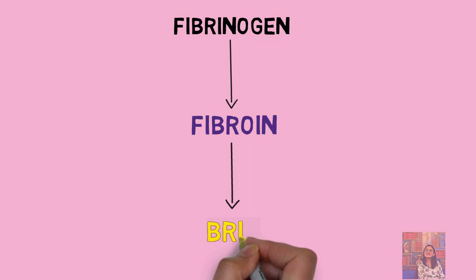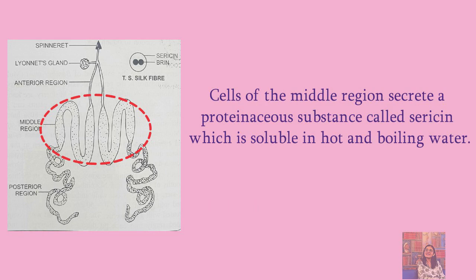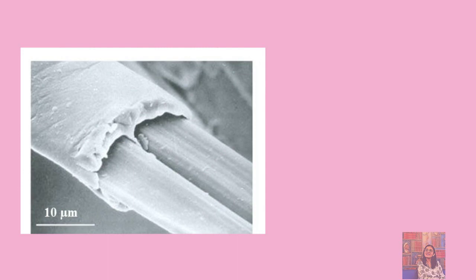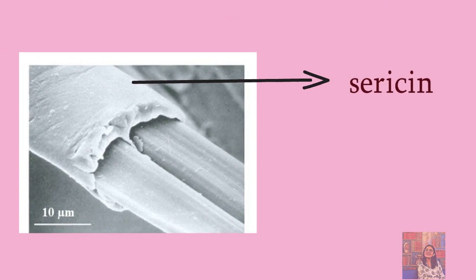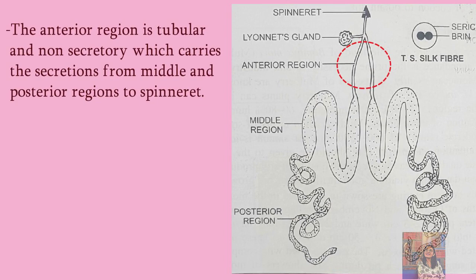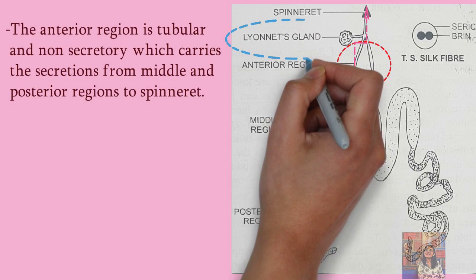Now the middle region has secretory cells, just like in the posterior region, but this region produces a proteinous substance we call sericin. When the silk passes through the anterior region, there are no secretory cells there — it is just a pathway. Before it is released, there is a gland shown in the diagram called Lyonid's gland, which helps with lubrication so that the silk can easily spin through.